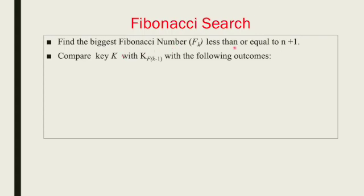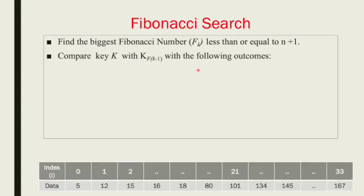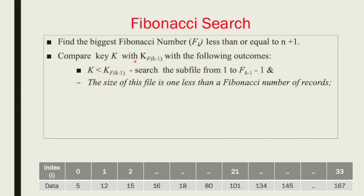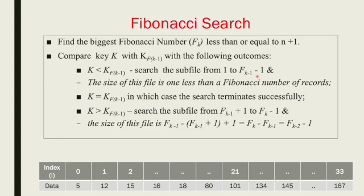The algorithm: find the biggest Fibonacci number less than or equal to n+1 — that is FK. Compare the key K with the element at position FK-1. There are three outcomes: if K is less than the element at FK-1, search the left subfile; if equal, the search terminates successfully; if K is greater, search the subfile from FK-1 plus 1 to FK-1.